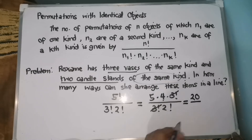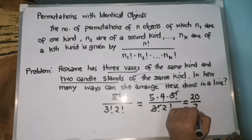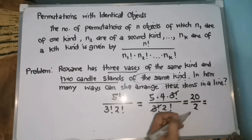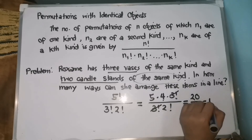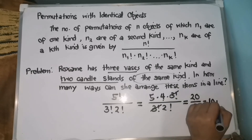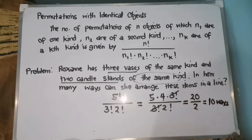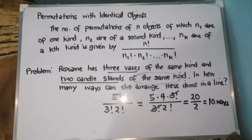So, that is 2 times 1 is 2. Therefore, 20 divided by 2 is 10. Therefore, there are 10 ways that Roxanne can arrange these items of the same kind in a line.